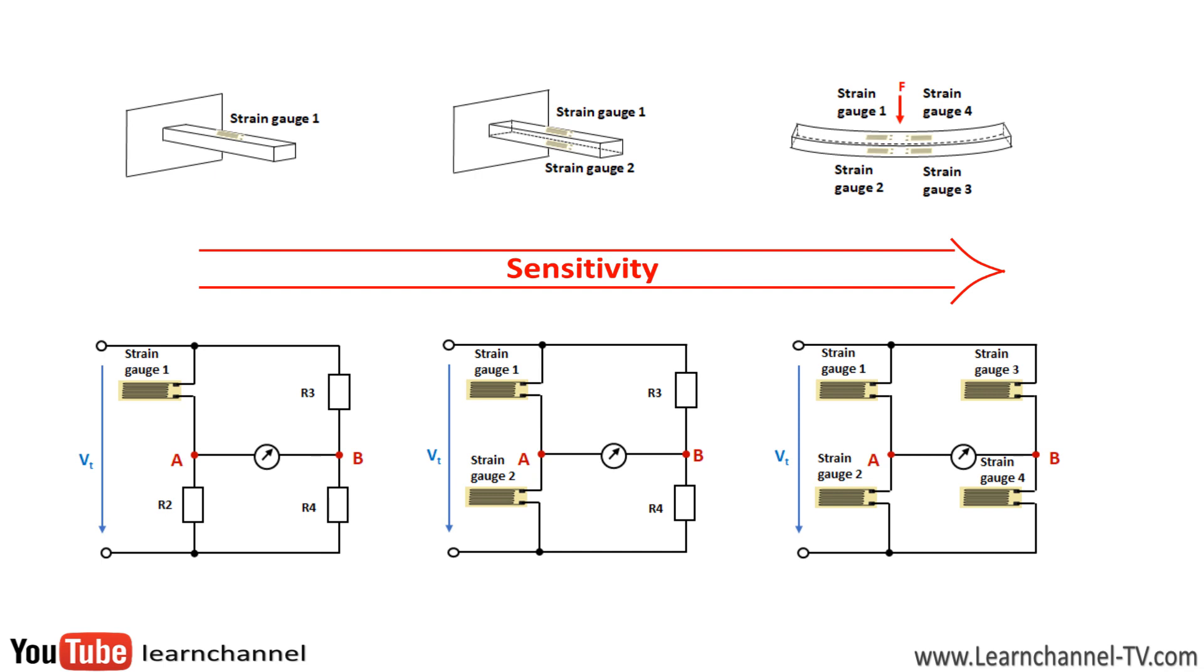The full bridge has the highest sensitivity, four times the sensitivity compared to the quarter bridge. Since disturbances such as temperature drift have the same effect on all four strain gauges, this results in an effective compensation of these disturbance variables. When installing the strain gauges, make sure that two are stretched and two are compressed.